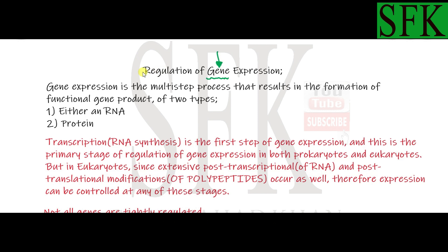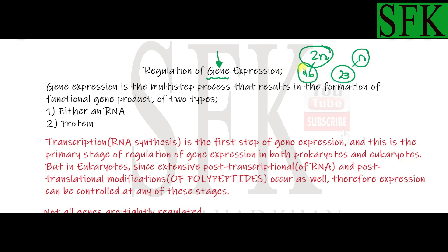Every cell of the human body contains a complete set of chromosomes — the 2n diploid number — except for the gametes which contain n chromosomes. The chromosome set number for humans is 46, so 2n represents 46 chromosomes and n represents 23. Every cell of the human body contains the complete set of the human genome, but not all genes are expressed in every cell.